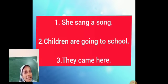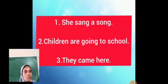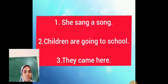Next one: Children are going to school. Children is the subject, are going is the verb. You have to ask the question to the verb — what or whom? When we ask what or whom to the verb, we don't get any answer. So this particular sentence does not have an object.